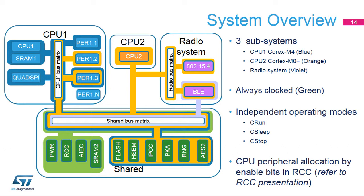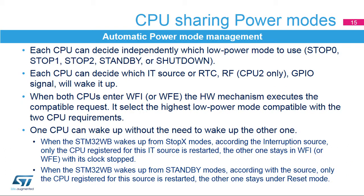Each CPU can independently decide which low-power mode to use — stop 0, stop 1, stop 2, standby, or shutdown — and which IT source, RTC, RF (CPU2 only), or GPIO signal will wake it up. When both CPUs enter WFI or WFE, the hardware mechanism selects the highest low-power mode compatible with both CPUs' requirements. One CPU can wake up without waking up the other. When waking from Stop X modes, only the CPU registered for the interrupt source is restarted; the other stays in WFI or WFE with its clock stopped. When waking from standby modes, only the CPU registered for the source is restarted; the other stays under reset.